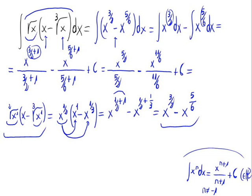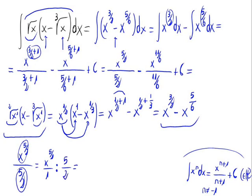Now, let's operate both of the fractions. We would have x raised to 5 halves divided by 5 halves, minus x raised to 11 sixths divided by 11 sixths, plus the constant c. The fraction x raised to 5 halves divided by 5 halves, by cross multiplication, would be equal to 2 times x raised to 5 halves divided by 5.